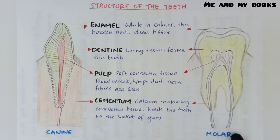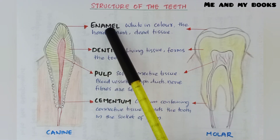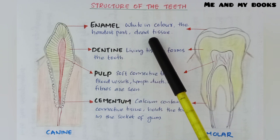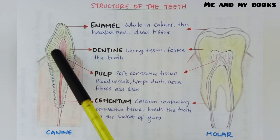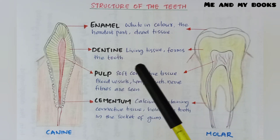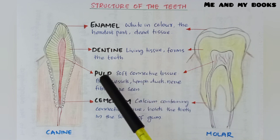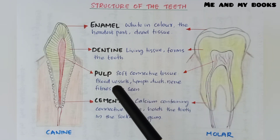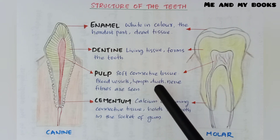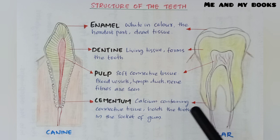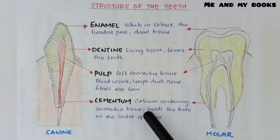Structure of the teeth — two types given: canine and molar. First part: enamel — white in color, the hardest part, and it is dead tissue. Next is dentine — a living tissue that forms the tooth. Then pulp — soft connective tissue containing blood vessels, lymph ducts, and nerve fibers. Next is cementum — a calcium-containing connective tissue that holds the tooth in the socket of the gum.